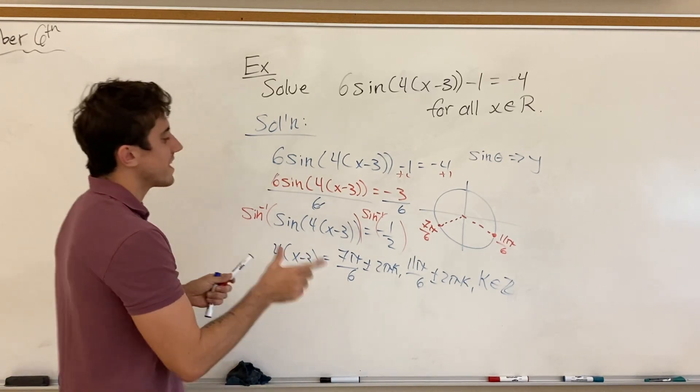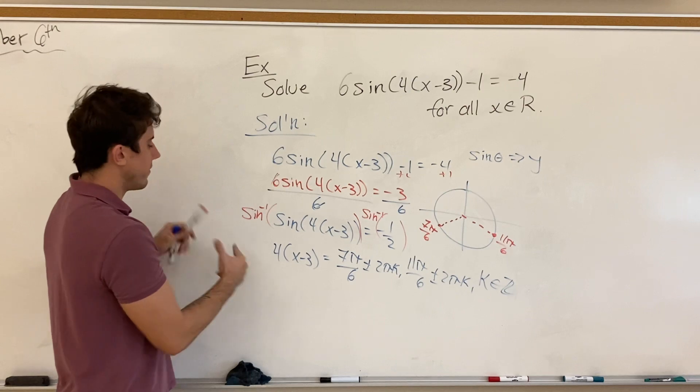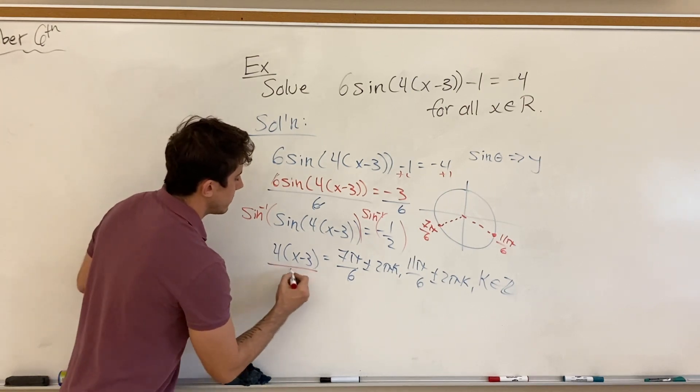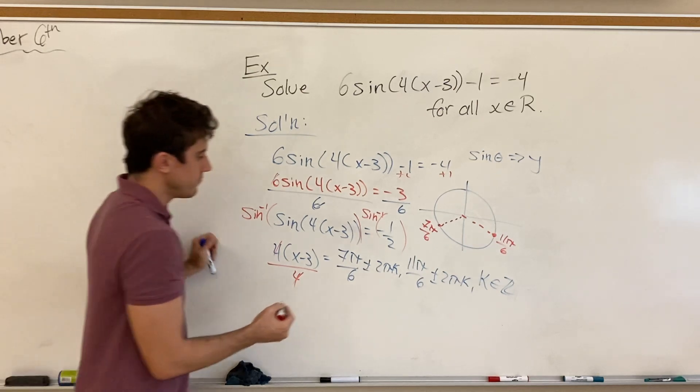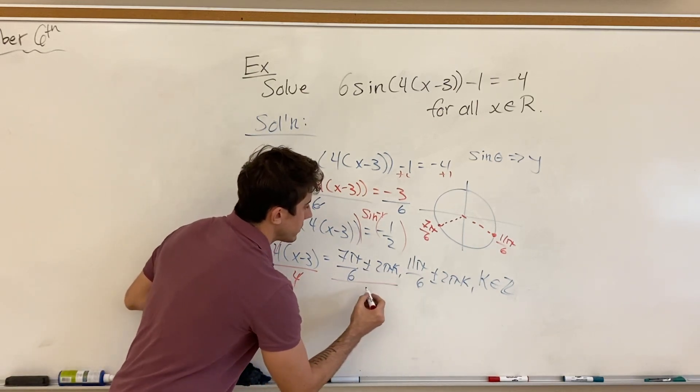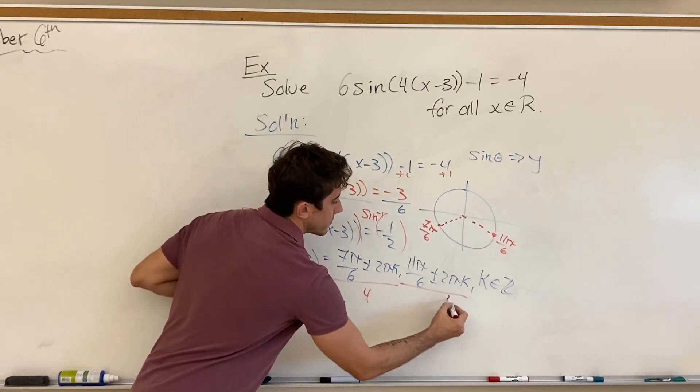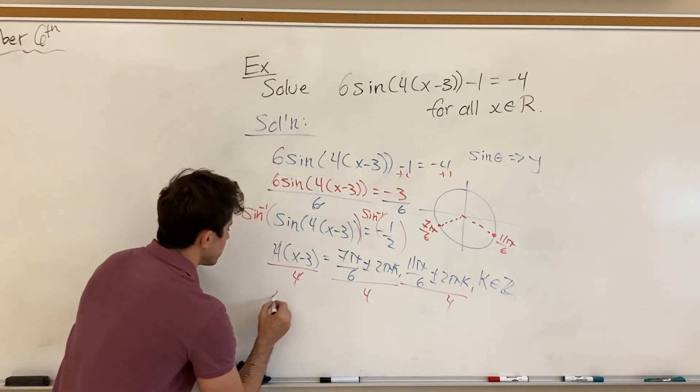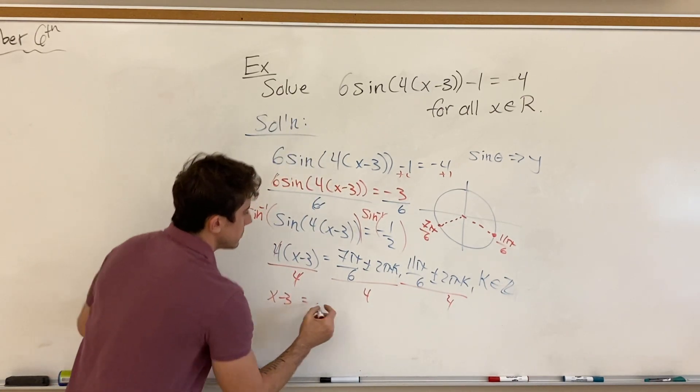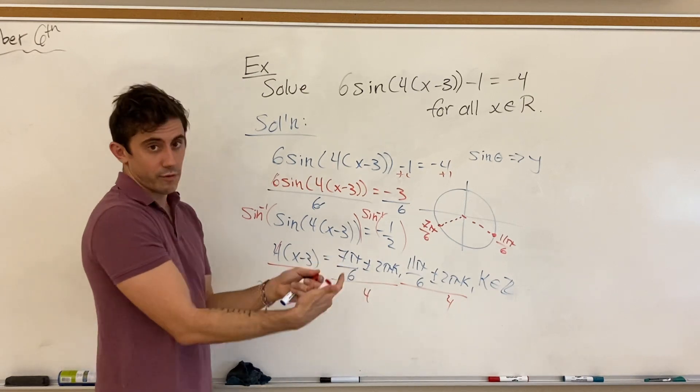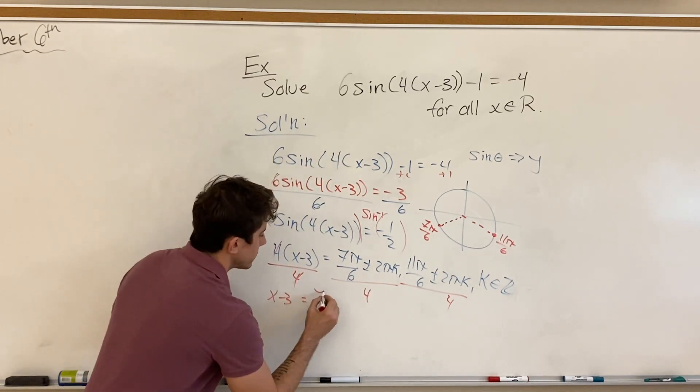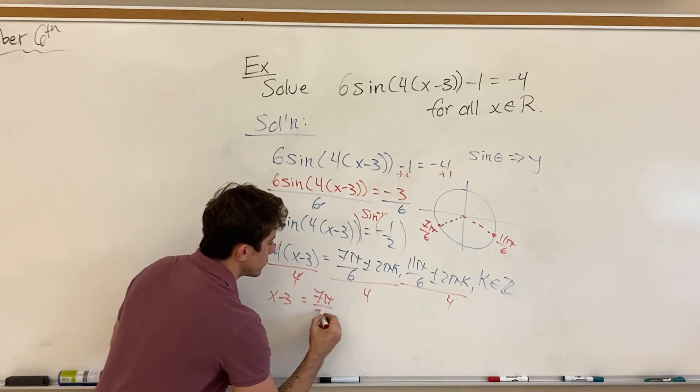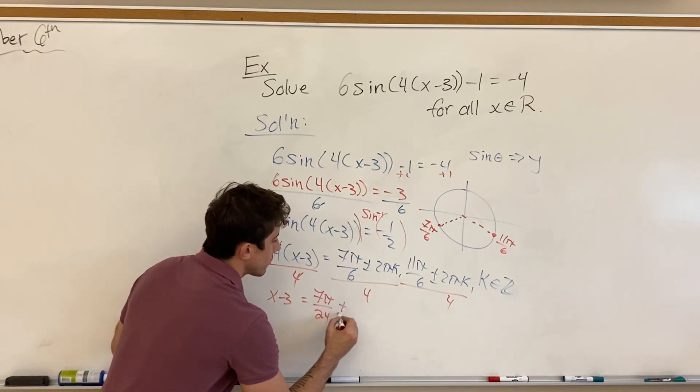And so it's at this point that we're going to perform the algebra of dividing by 4 on both sides, and so we divide by 4, and we divide everything by 4. And so if we go ahead and do that, everything by 4, what we end up with is x minus 3 is equal to 7 pi over 6 over 4 means that we can combine our denominators for a solution of 7 pi over 24 plus or minus.